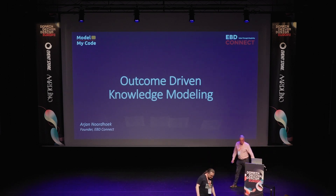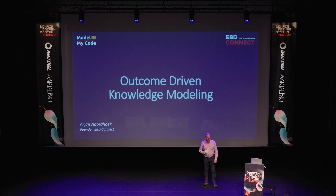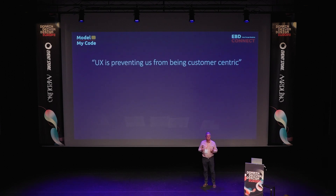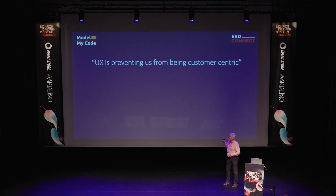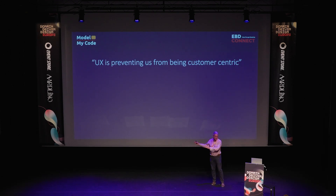Let's jump right into it. What I want to talk about is outcome-driven knowledge modeling. It's sort of a mixture between event storming and event modeling, but it's going backwards. Why? Because I am of the opinion that at the moment UX is actually causing more problems than they're solving. They are already giving us a direction for a solution while we haven't talked about the solution yet.